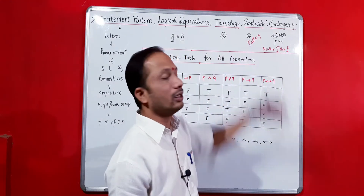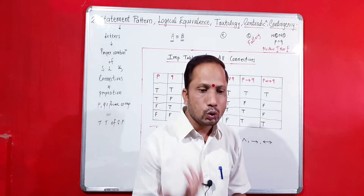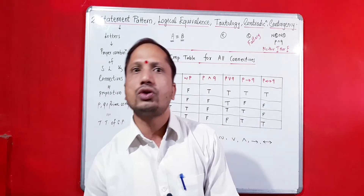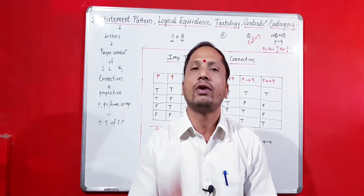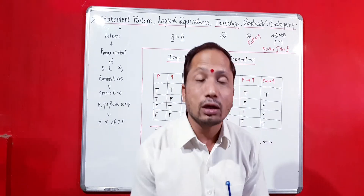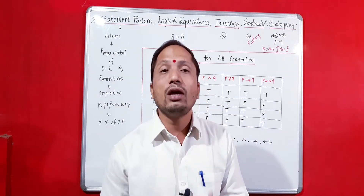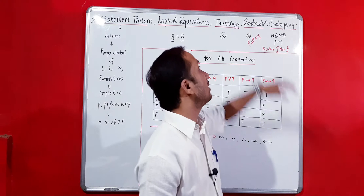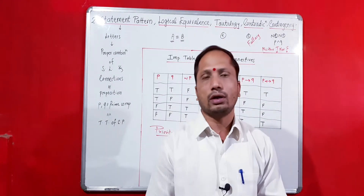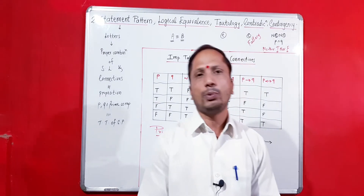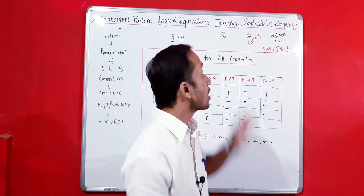Opposite to tautology is contradiction, also known as fallacy. Whenever the truth values of the final combination of the statement pattern are all false, that type of statement pattern is known as contradiction.